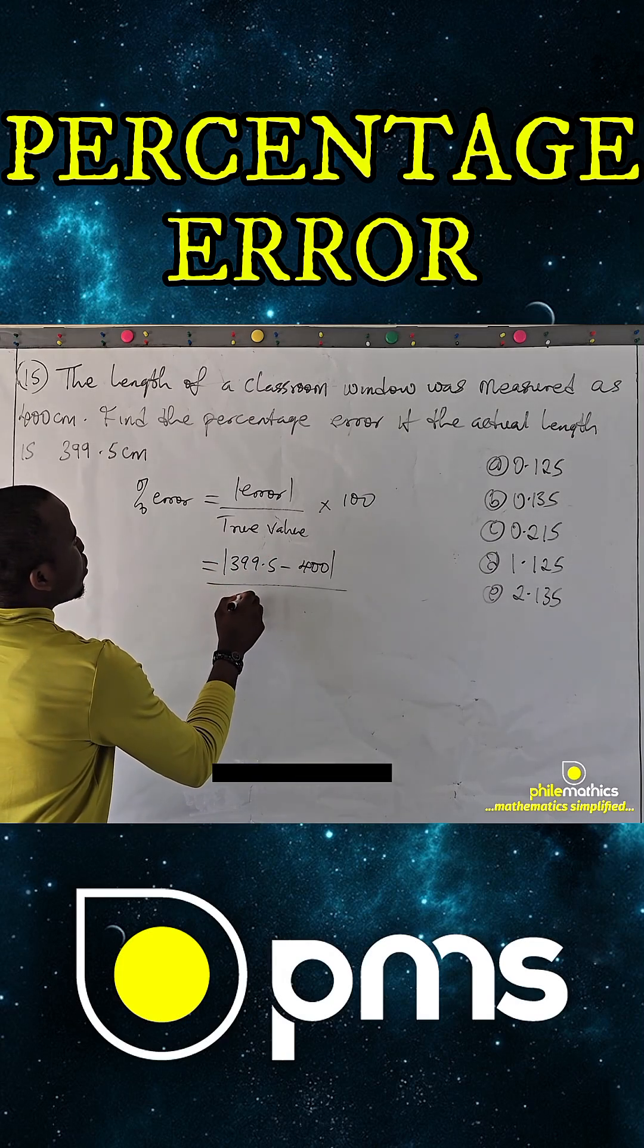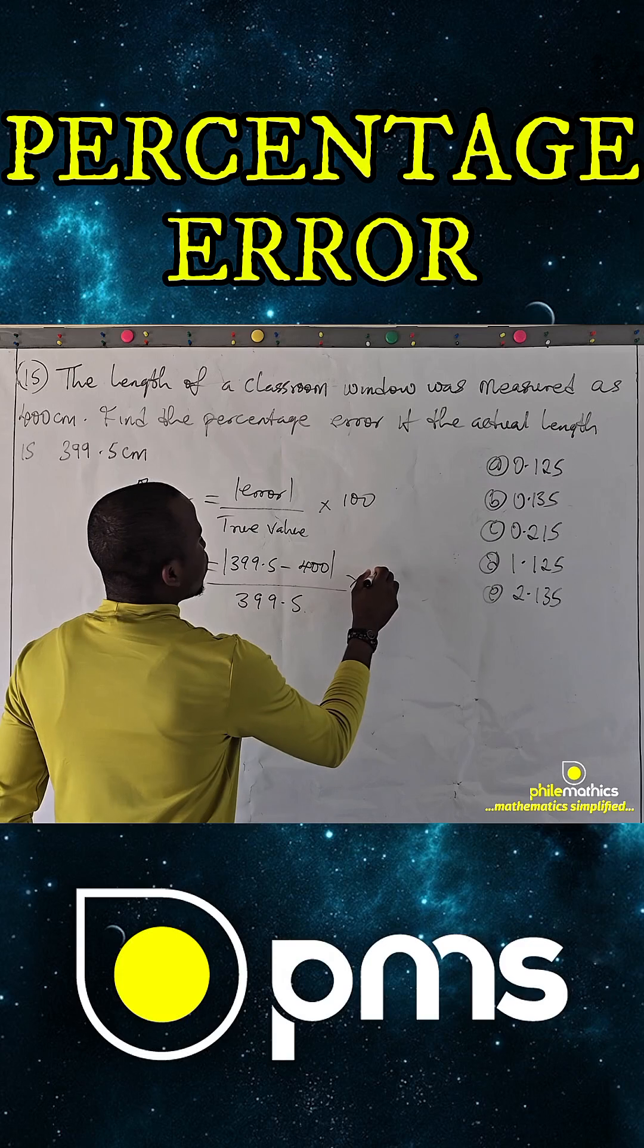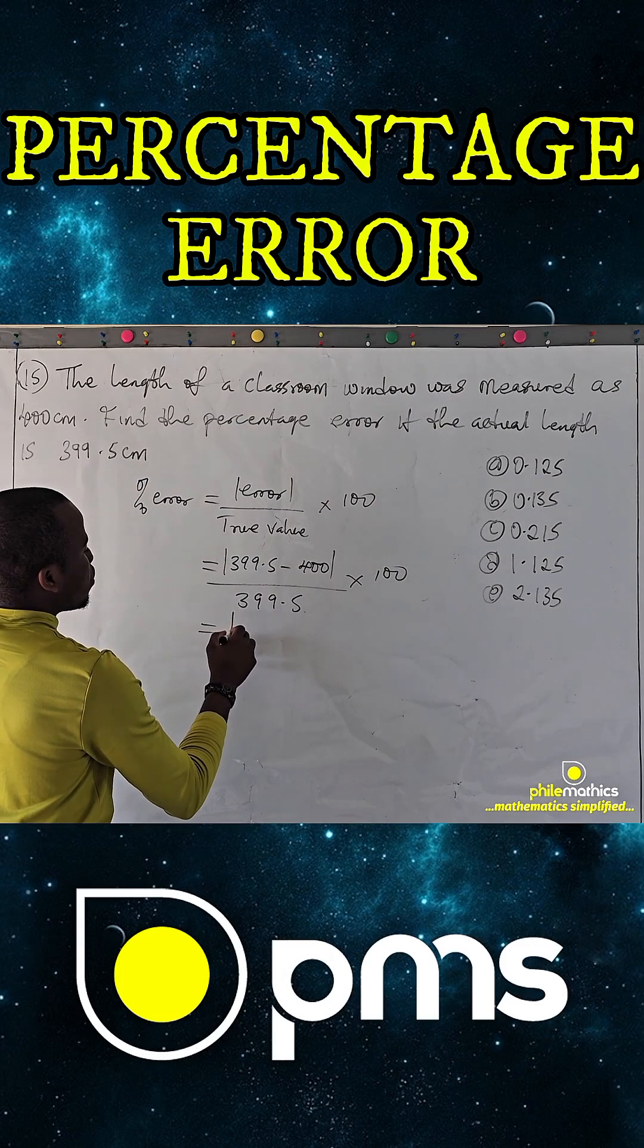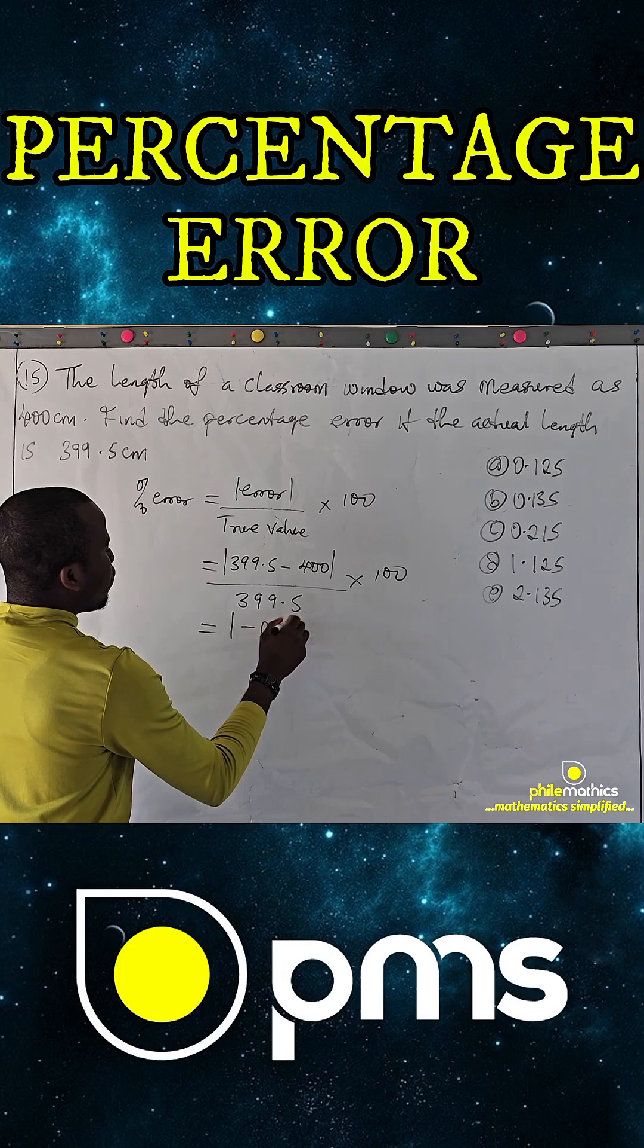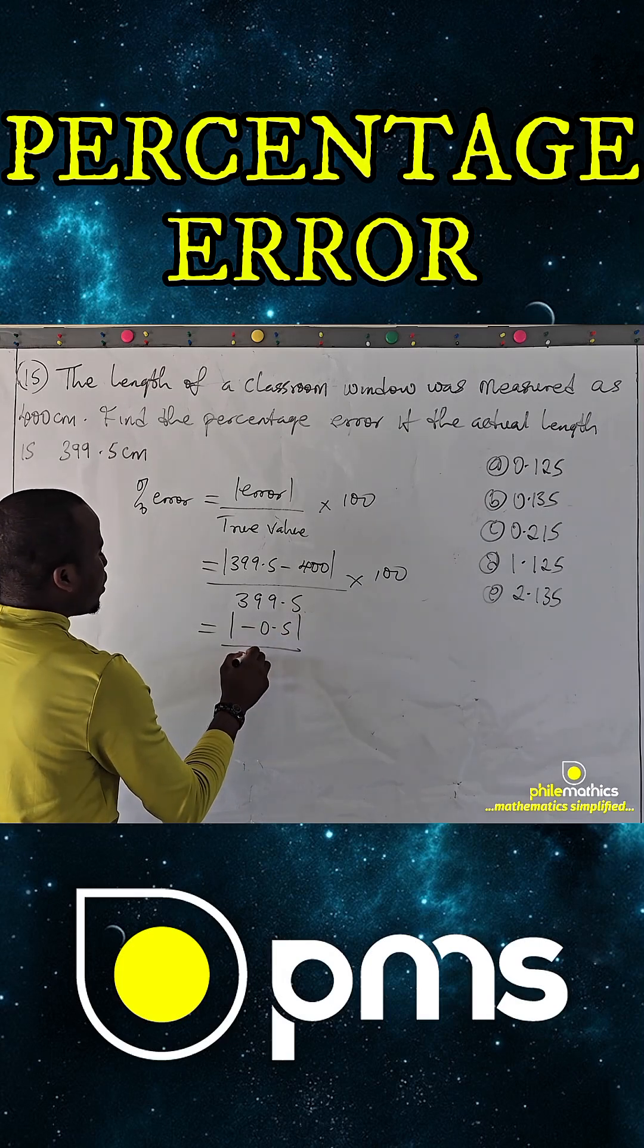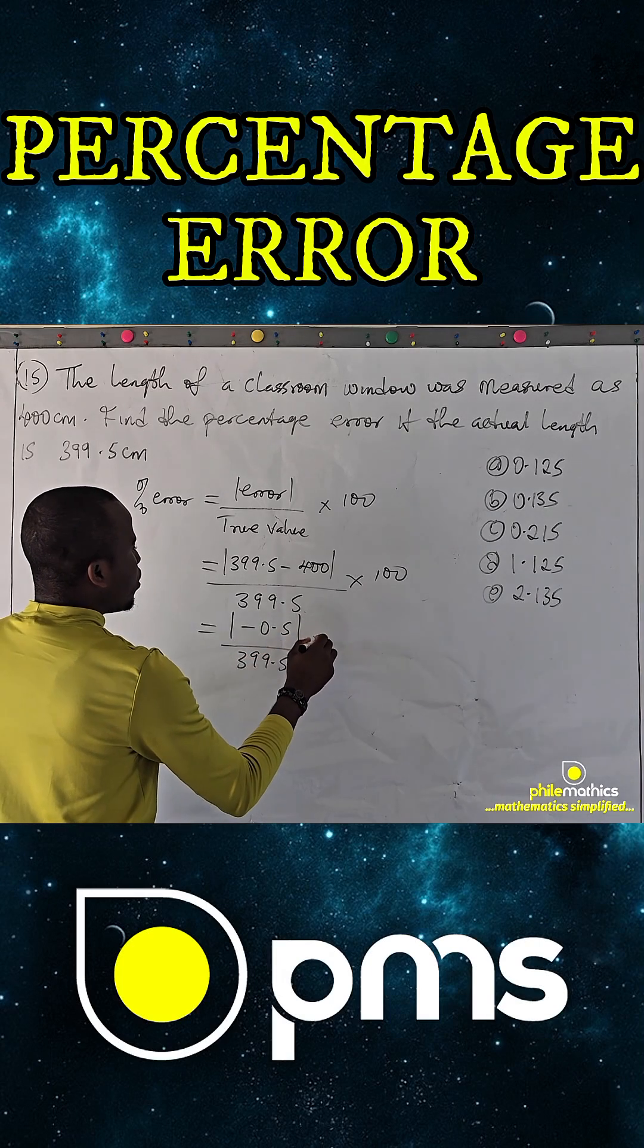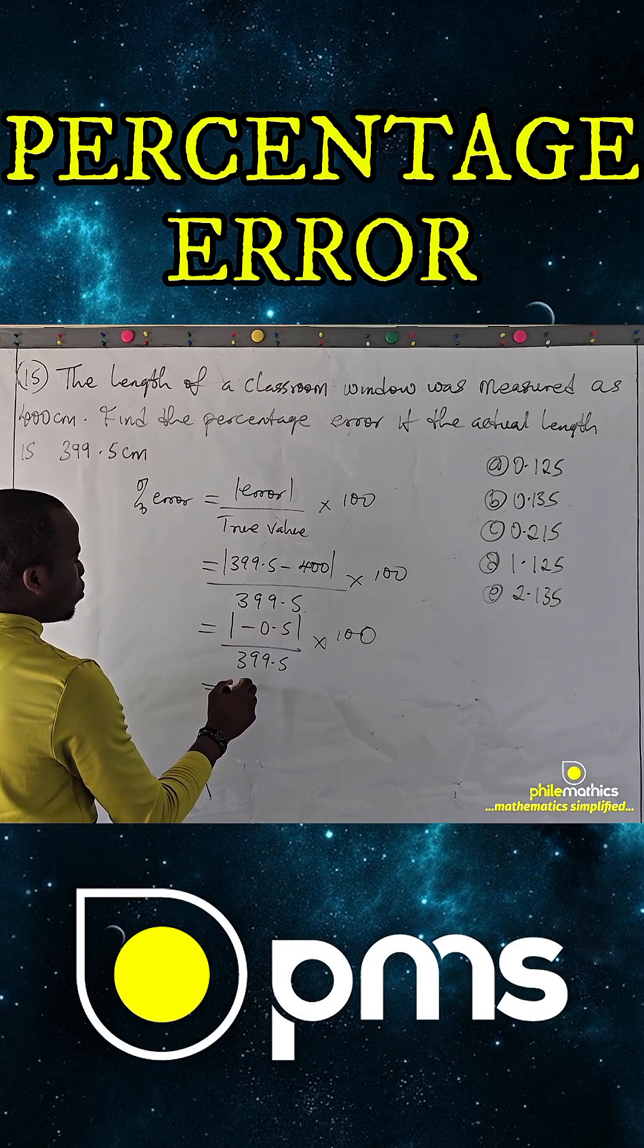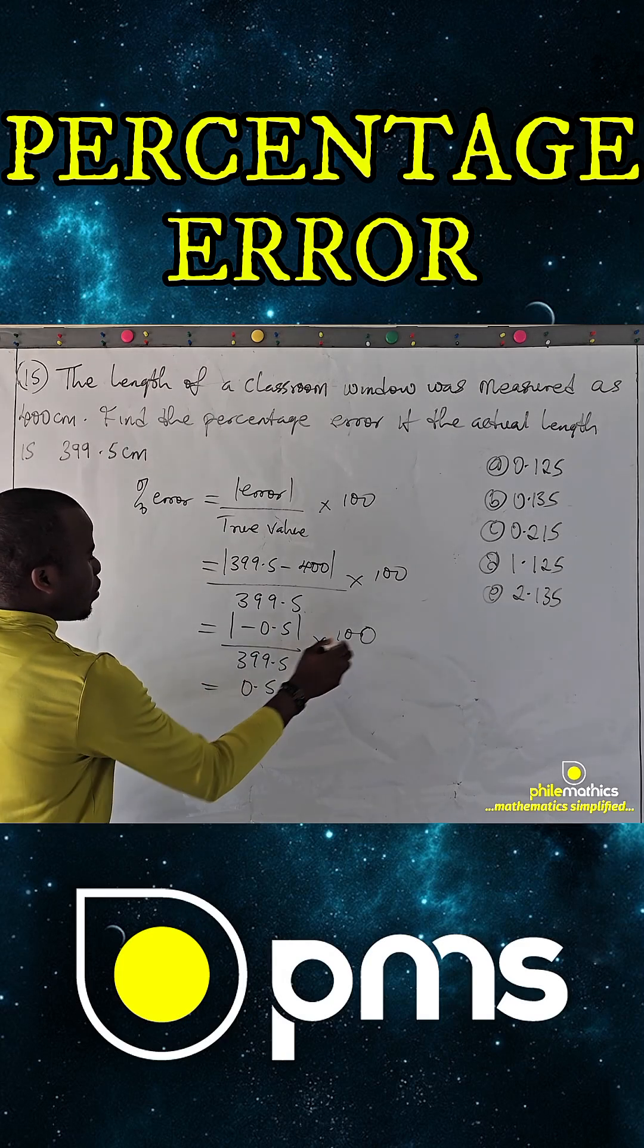The true value is 399.5 times 100. If we subtract this, this is absolute value of minus 0.5 over 399.5 times 100. And so this is simply 0.5 times 100 over 399.5.